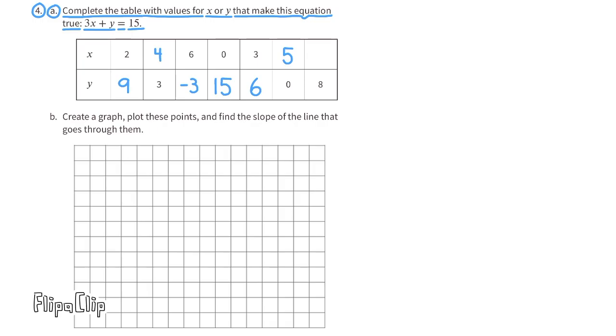The last column is a little bit trickier, because the y value is 8. 15 minus 8 equals 7, so what number times 3 equals 7? 2 and 1 third times 3 equals 7, and 2 and 1 third is also equivalent to 7 thirds. When the y value is 8, the x value is 7 thirds, or 2 and 1 third.